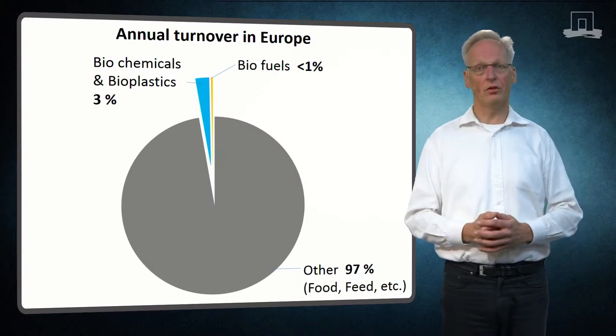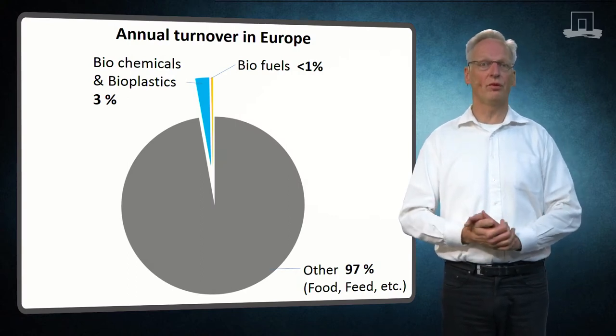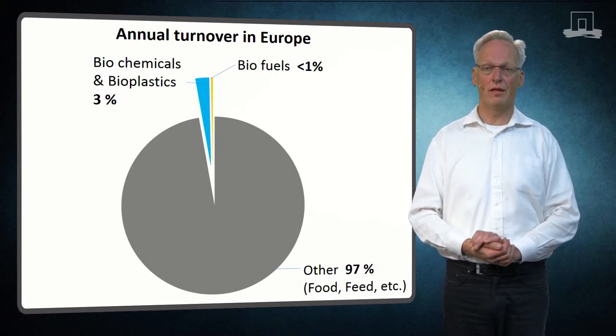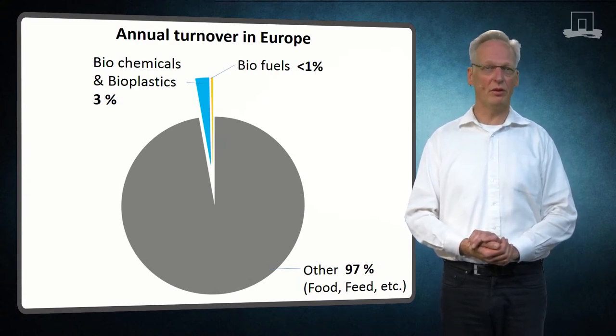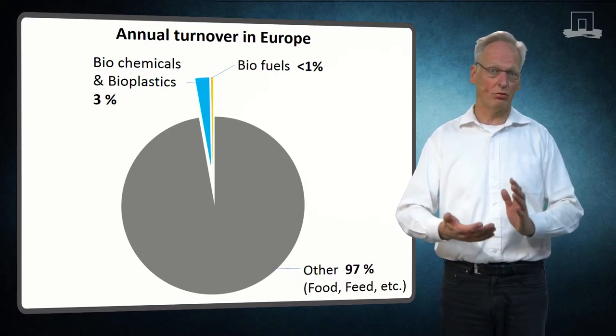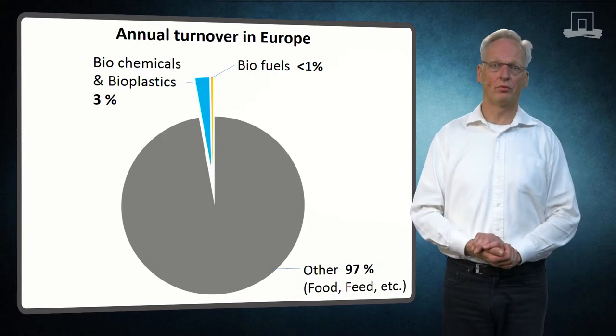First, note that in Europe alone we have €2,050 billion turnover of biomass in food and biobased products. But merely some €50 billion are realized by biochemicals and bioplastics, next to some €6 billion turnover in biofuels.